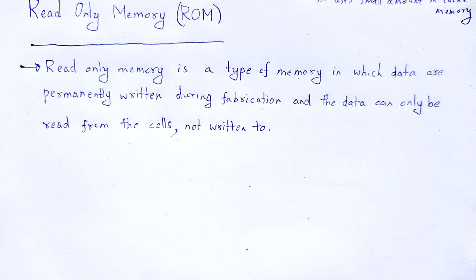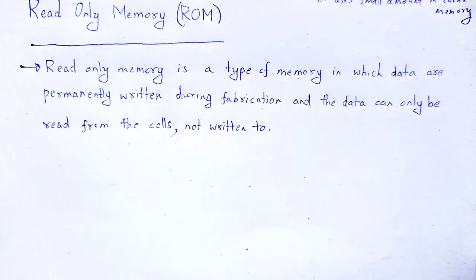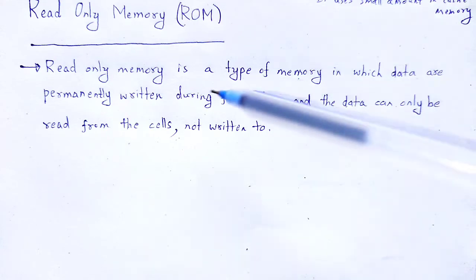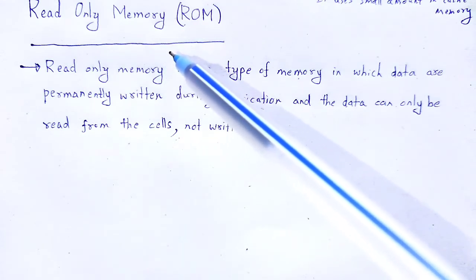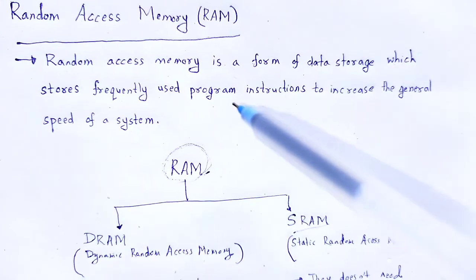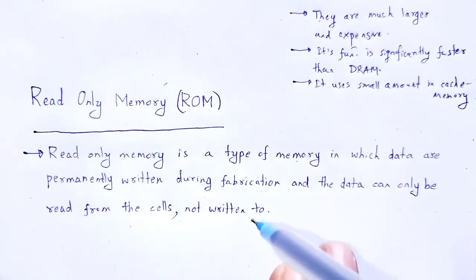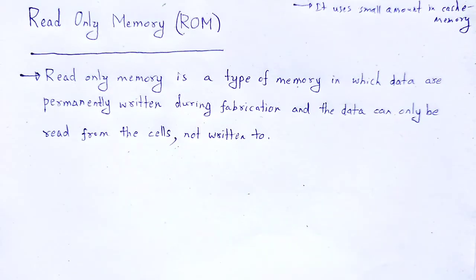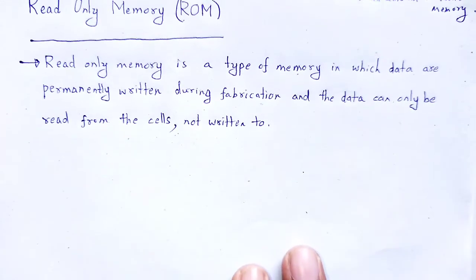The programming that allows a computer to boot when turned on is contained in ROM. The basic data requirements for the computer to open, boot, and reset — these basic information are stored in read-only memory. It is not lost when the computer power is turned off, but random access memory will be lost when the computer is turned off. Read-only memory is under the category of non-volatile memory, but random access memory is volatile.